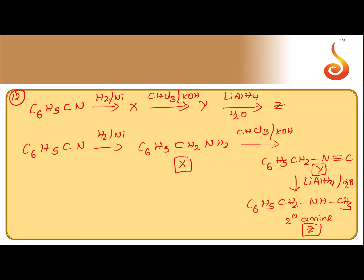To summarize: starting with cyanide, reduction gives primary amine — that is X. Primary amine treated with chloroform and potassium hydroxide gives isocyanide — that is Y, via the carbylamine reaction. Isocyanide on reduction gives a secondary amine — that is Z.